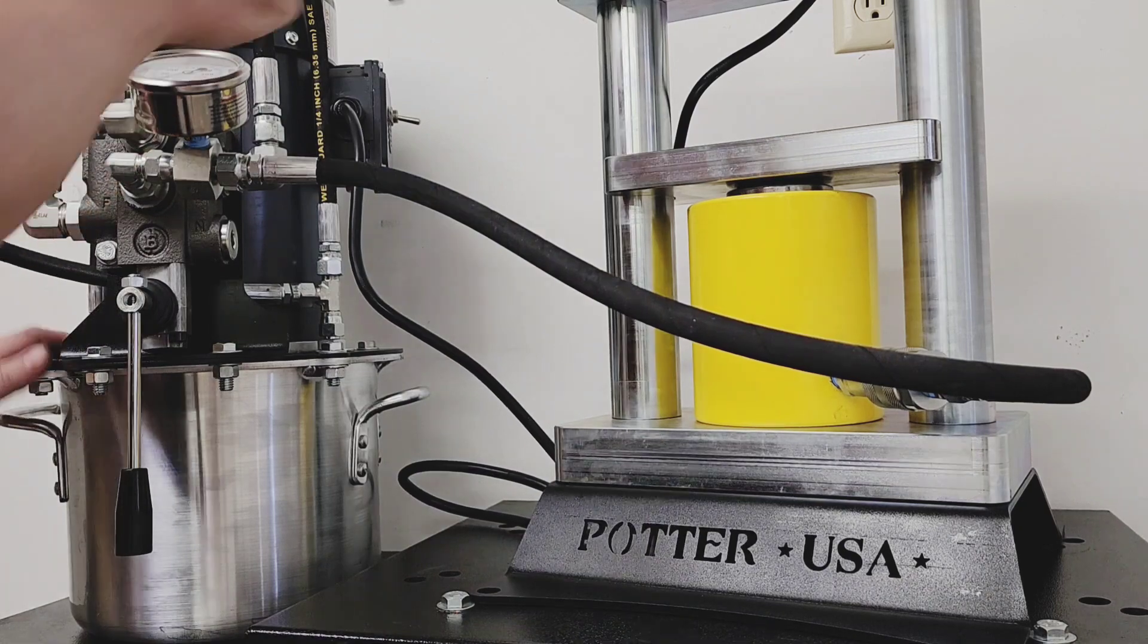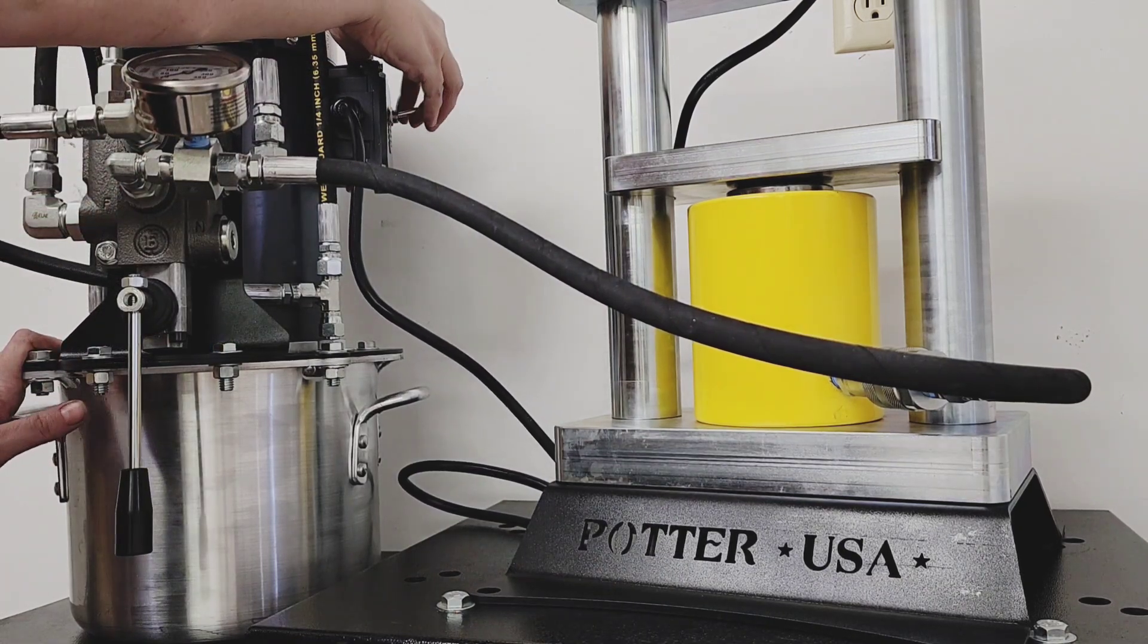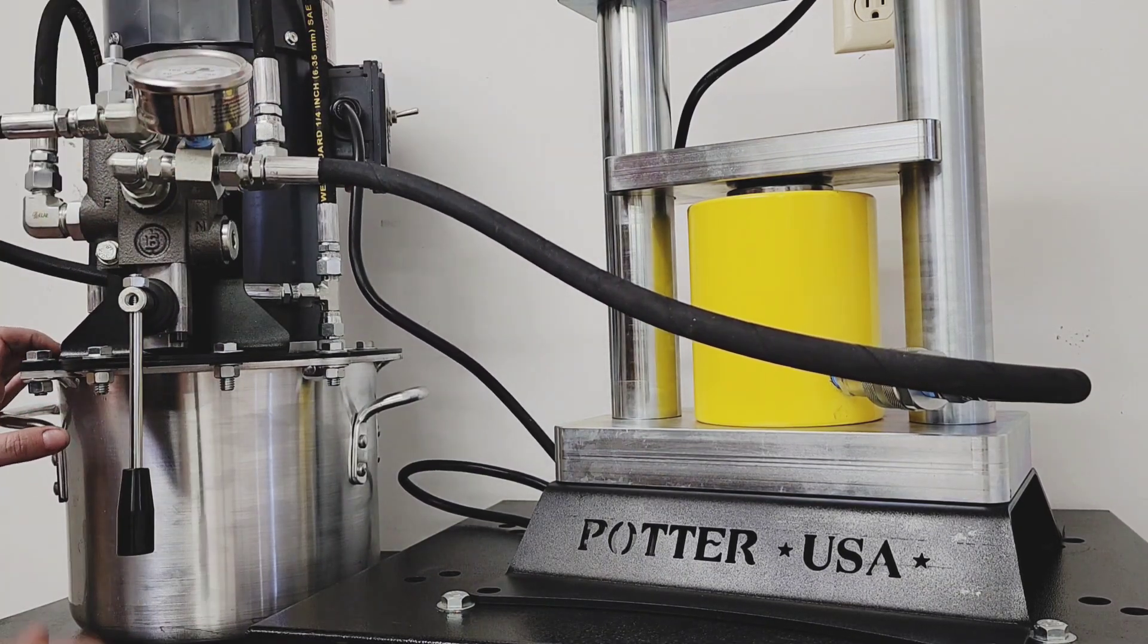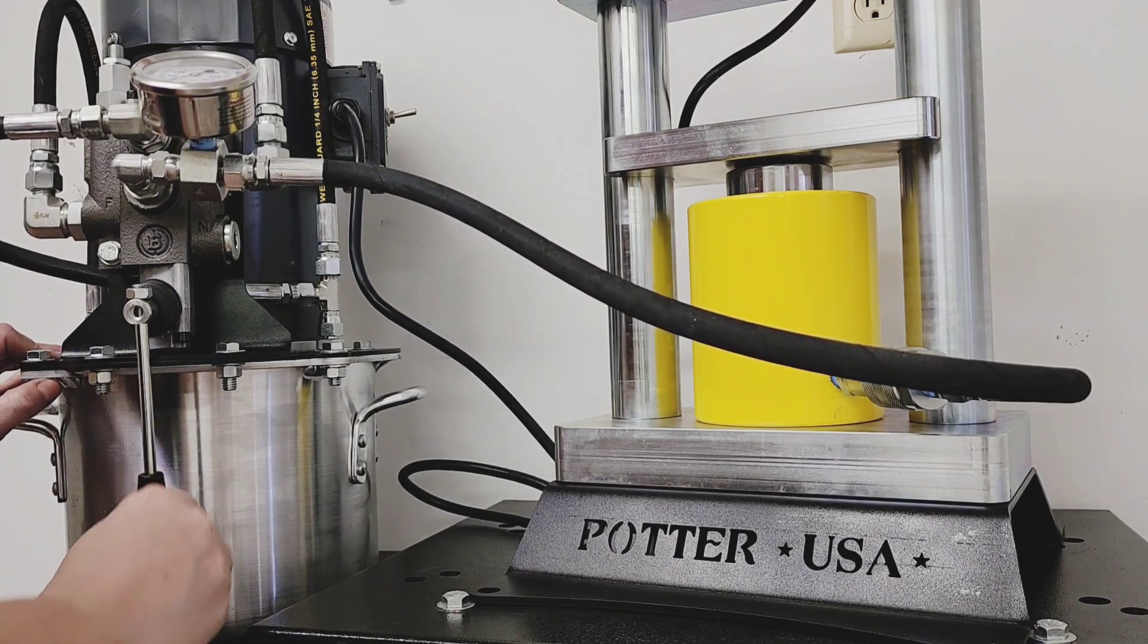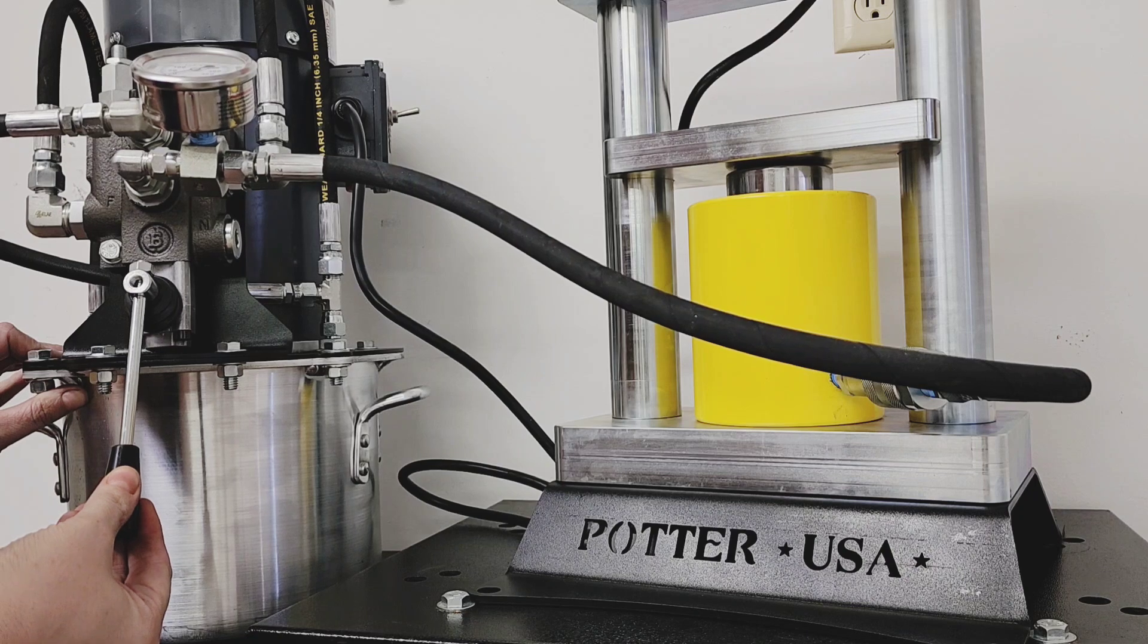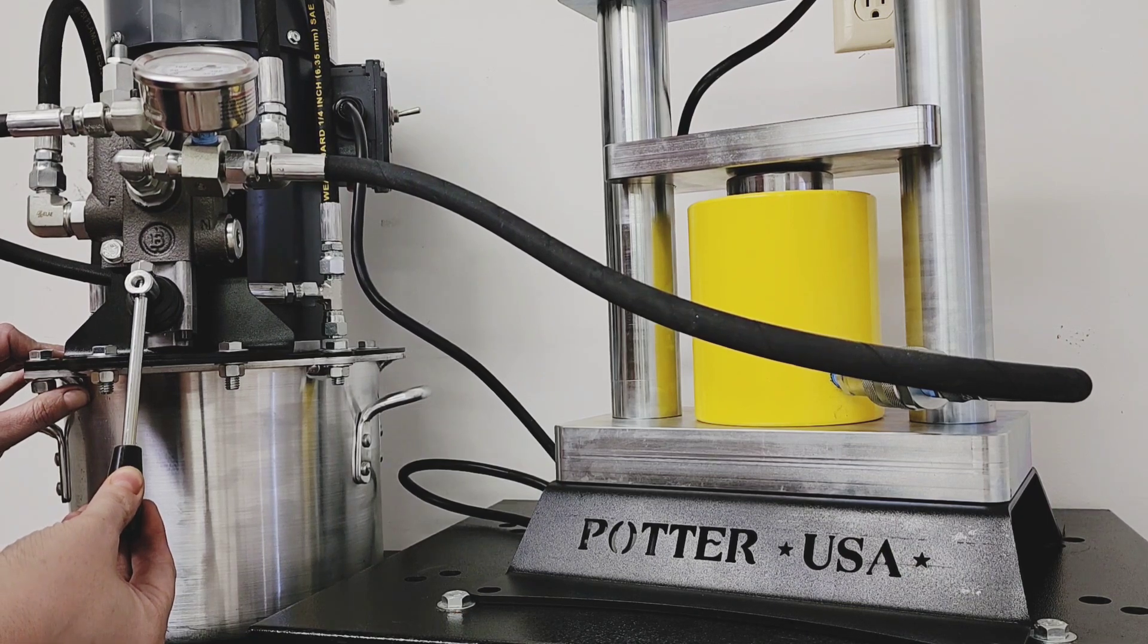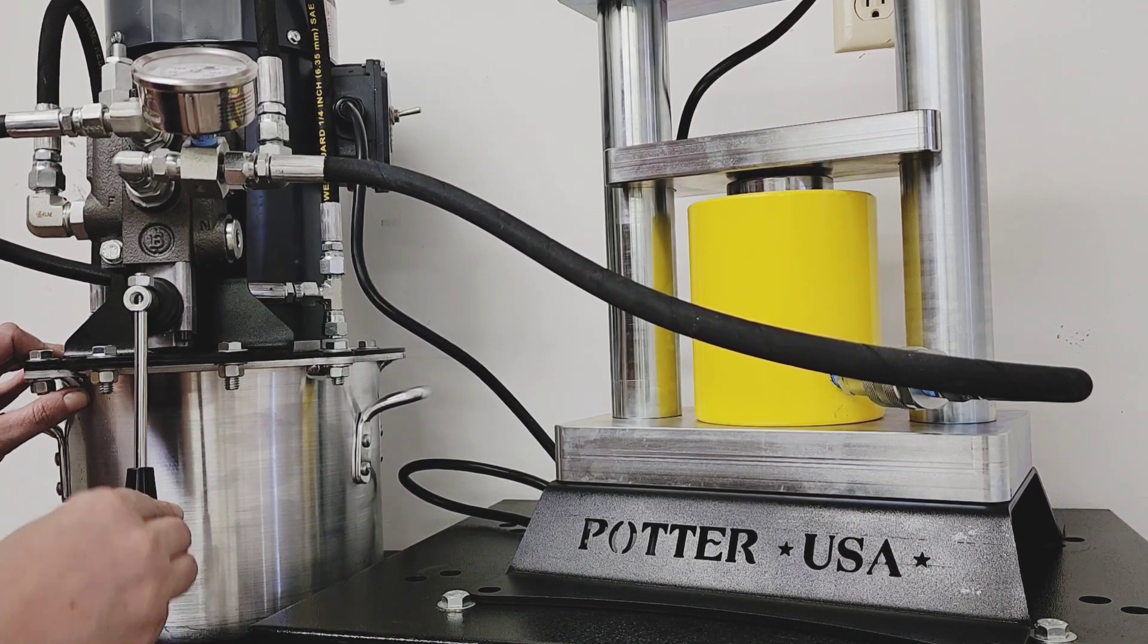Locate the toggle on the cylinder and flip it up to turn the press on. Use the handle to raise and lower the platen. Pulling it towards you lowers the platen, and pushing it away from you raises the platen.